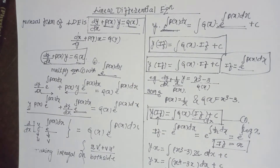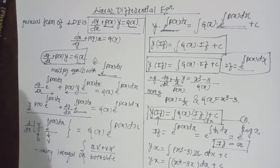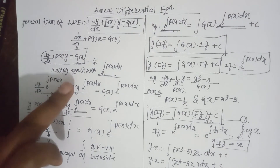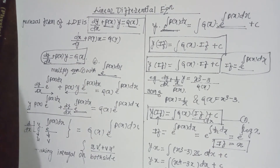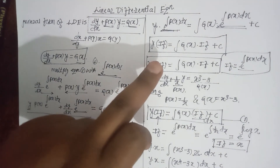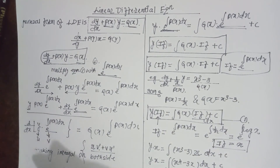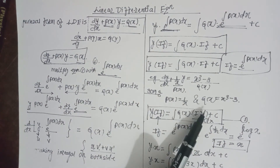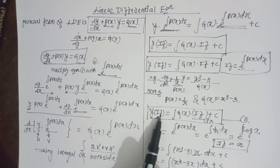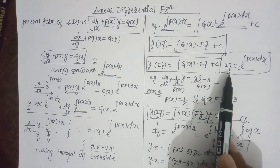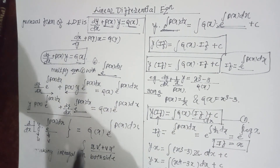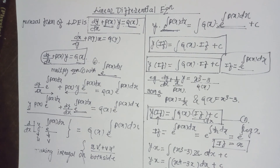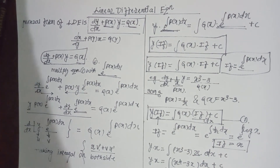Let's recap. The general form of a linear differential equation is dy/dx plus P(x)·y equals Q(x). We multiply that equation by e^∫P(x)dx, which becomes the integrating factor. After adjusting terms and integrating, we get the general solution. We then extracted P(x) and Q(x) from the problem, found the integrating factor, and solved. In the next video, we will solve more problems on linear differential equations. Thank you.